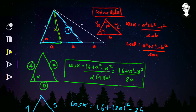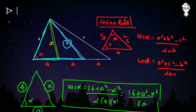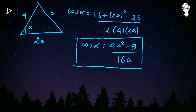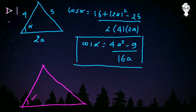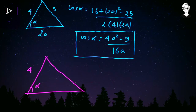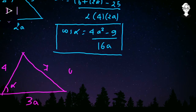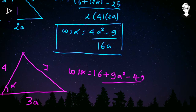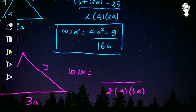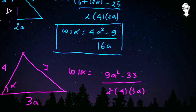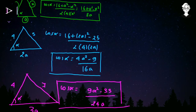Now the final application of the cosine rule — the third triangle. This triangle has angle alpha, side 4, base equal to a + a + a = 3a, and the opposite side is 7. So cos alpha = (16 + 9a² − 49) / (2 × 4 × 3a) = (9a² − 33) / (24a). Now we have three expressions for cos alpha, which we can call equations 1, 2, and 3.